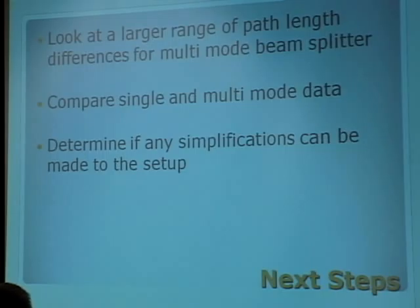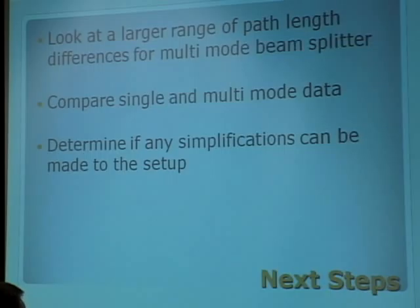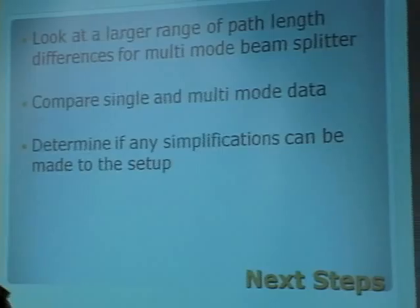In a single-mode fiber, only one mode propagates down the fiber, which means you need to be a lot more precise, and that fiber is disrupted much more easily — making single-mode fibers very difficult to use in an experimental setup. So if we find that a multimode fiber produces the same effect and they're comparable, then multimode fibers — which require a lot less precision and are disrupted a lot less easily — can be used in place of single-mode fibers, not just in a research setting but also in an undergraduate laboratory setting. This will simplify experimentation in fields such as quantum teleportation and quantum computing.